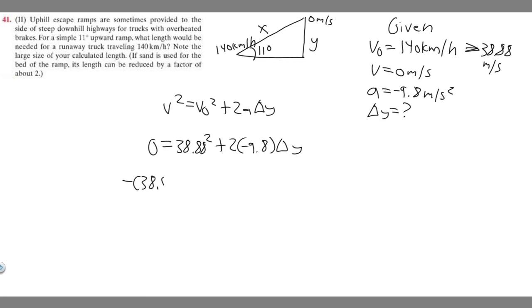So if I minus this to the other side, minus 38.88 squared equals 2 times minus 9.8 is minus 19.6 delta y. And then just divide both sides to get delta y by itself. So delta y equals minus 38.88 squared over minus 19.6. If you go ahead and do this, you'll get delta y equals 77.092.